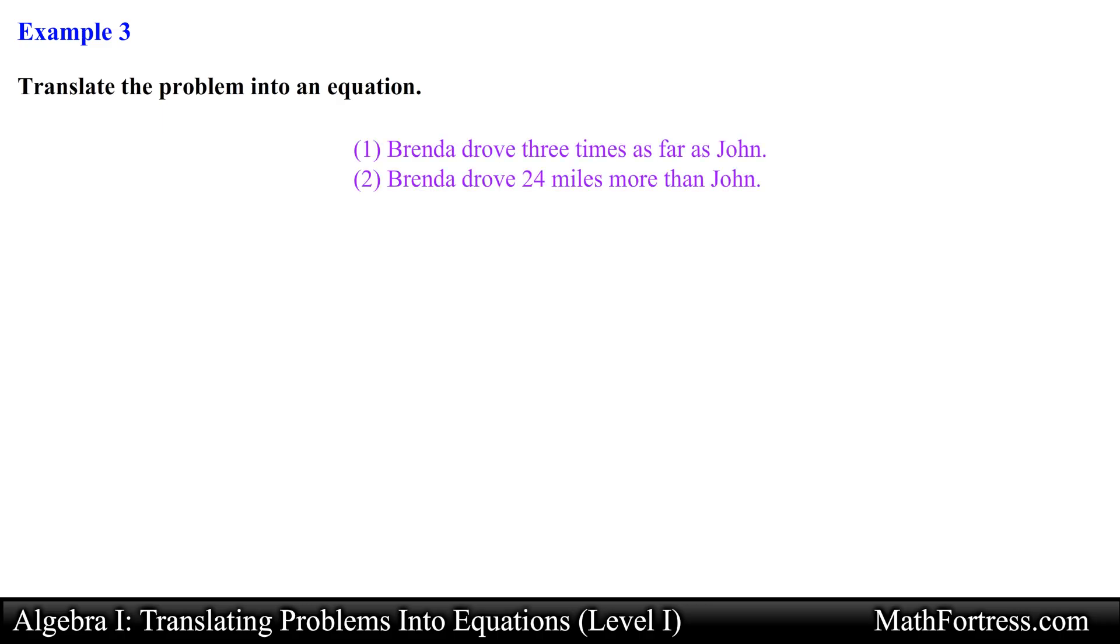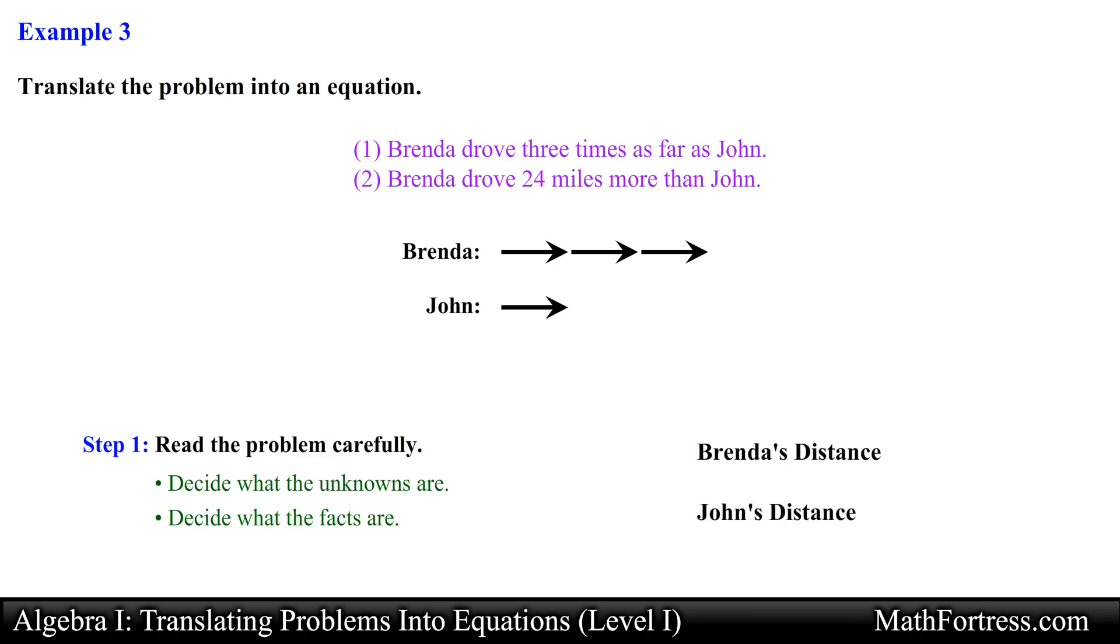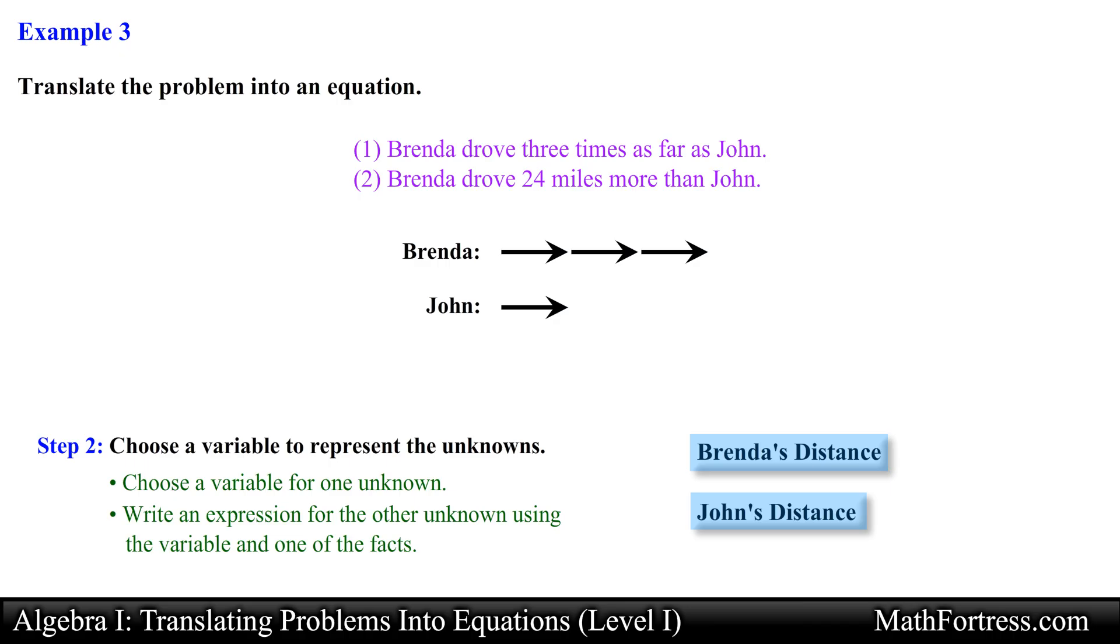Brenda drove 3 times as far as John. Brenda drove 24 miles more than John. Once again feel free to make a drawing to help you visualize and analyze the problem. The first step is to identify our unknowns. After reading both sentences we see that we don't know how many miles Brenda or John drove so these quantities are going to be our unknowns. Next we need to assign variables to these unknowns. Once again let's determine which of the two unknowns we have little to no information on. Notice that we have sentences that relate Brenda's distance to John's distance but not the other way around. We have no idea what John's distance is or how it is related to Brenda's distance so we will assign this quantity as our variable and we will use the letter j.